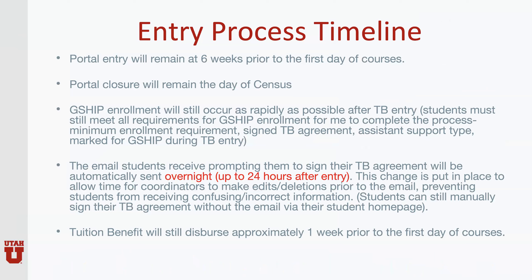As far as the entry process timeline, there are very few changes occurring here. Portal entry will still remain at six weeks prior to the first day of courses. Portal closure will remain on the day of census, leaving you about nine weeks of entry time. GSHIP enrollment will still occur as rapidly as possible after tuition benefit entry, but students still need to meet all requirements for GSHIP enrollment, including minimum enrollment requirements, signing their tuition benefit agreement, and being entered for tuition benefit in the portal. The email students receive prompting them to sign their tuition benefit agreement will be automatically sent overnight — up to 24 hours after entry. This change is put in place to allow time for coordinators to make edits and deletions prior to that email being sent to students, preventing students from receiving confusing or incorrect information. Students can still manually sign their TB agreement without the email via their student homepage should you need to expedite that process.